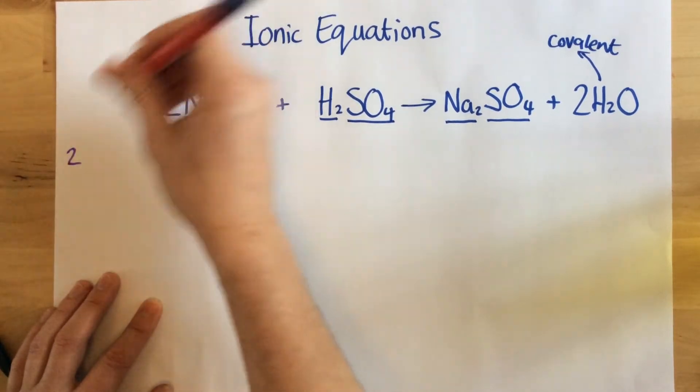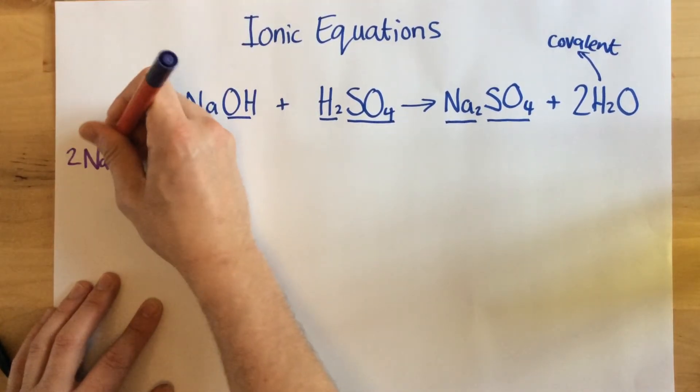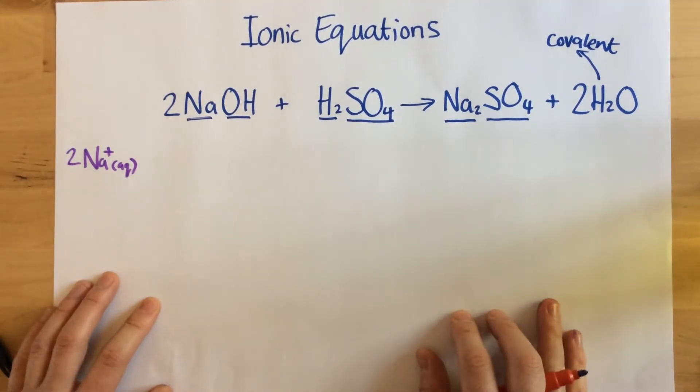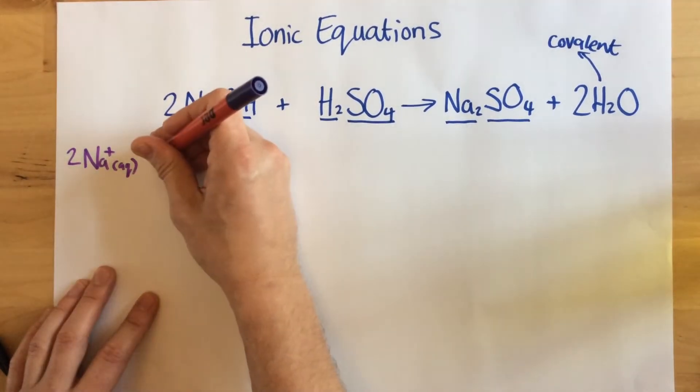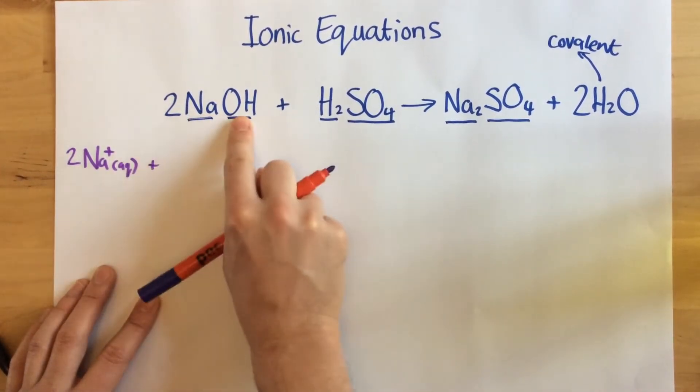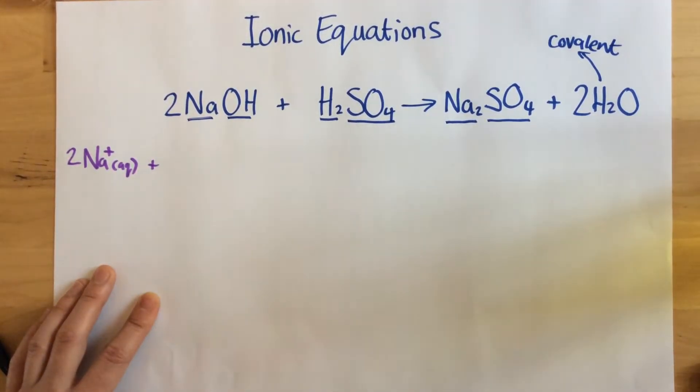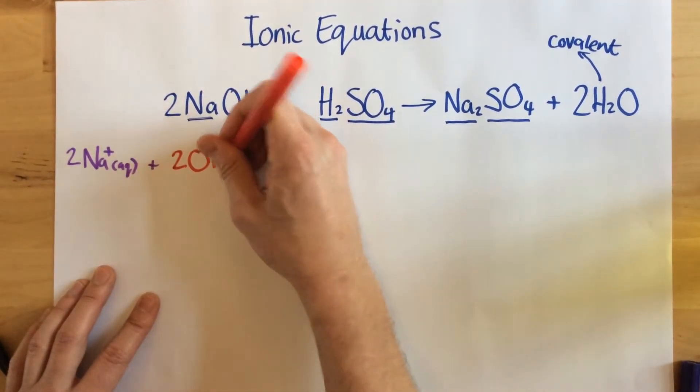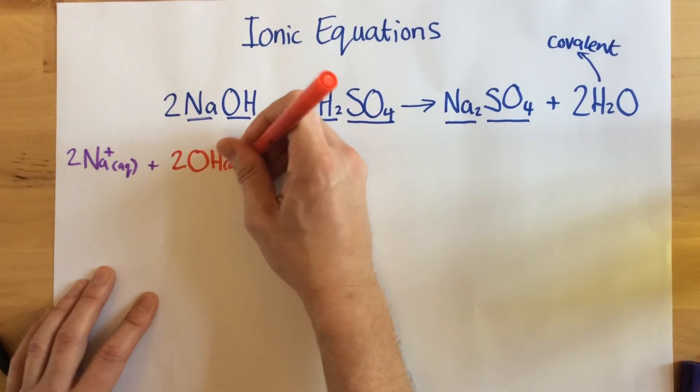So to begin with, we're showing this as 2Na+ and I'm just showing AQ to show that's in aqueous solution. Next up, let's have a look. This is going to break down into two hydroxide ions. A hydroxide ion is just one you're going to have to remember. OH- is a hydroxide ion.